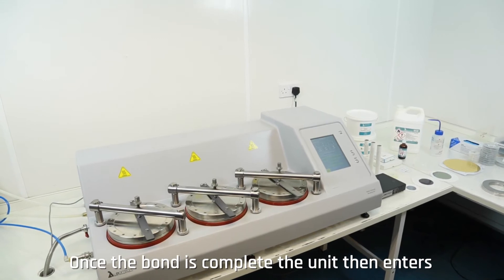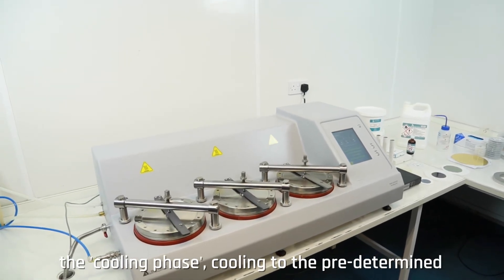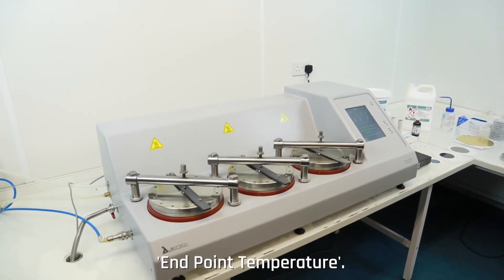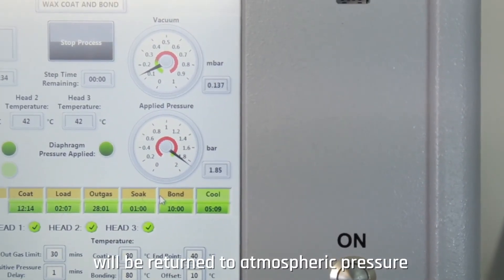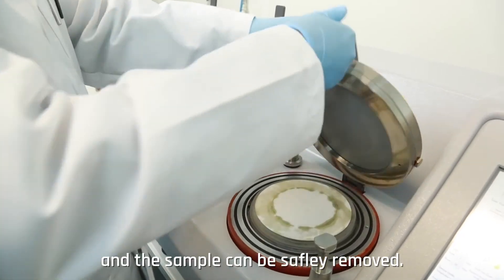Once the bond is complete, the unit then enters the cooling phase, cooling to the predetermined endpoint temperature. Once reached, both chambers will be returned to atmospheric pressure and the sample can be safely removed.